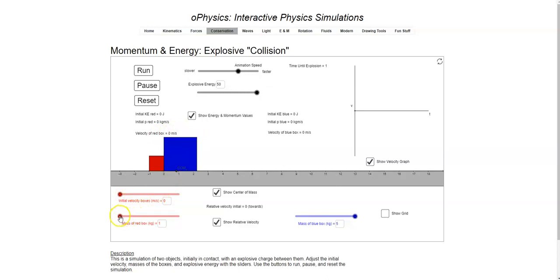Here we can adjust the masses. Right now the mass of the red box is one kilogram. We can bring it up to five. We can also change the mass of the blue box. So if these guys have the same mass, you could probably figure that if I let them explode, they'll move off with the same momentum and the same velocity because they have the same mass. So if I run it, there they go.